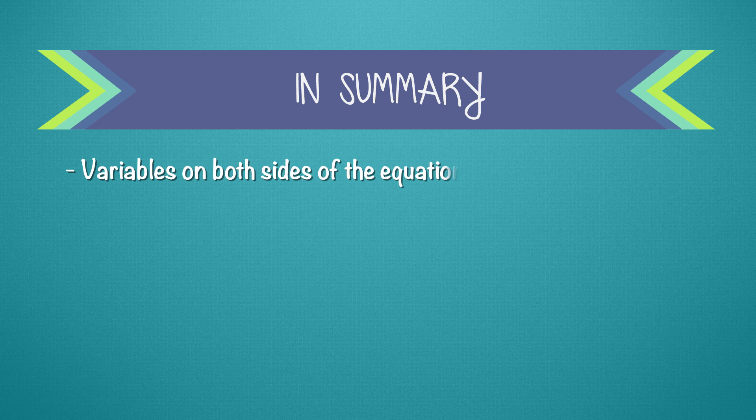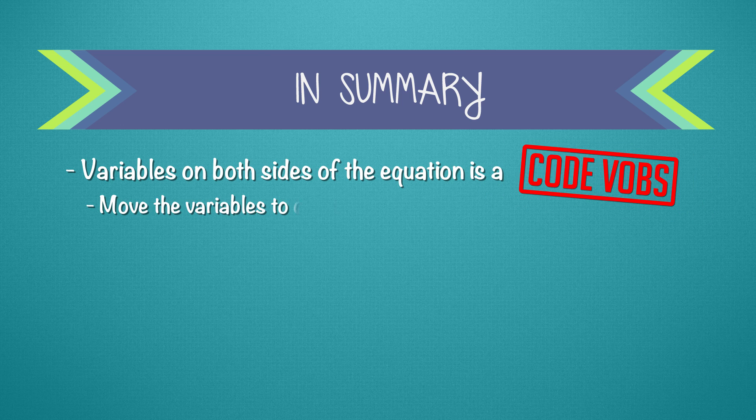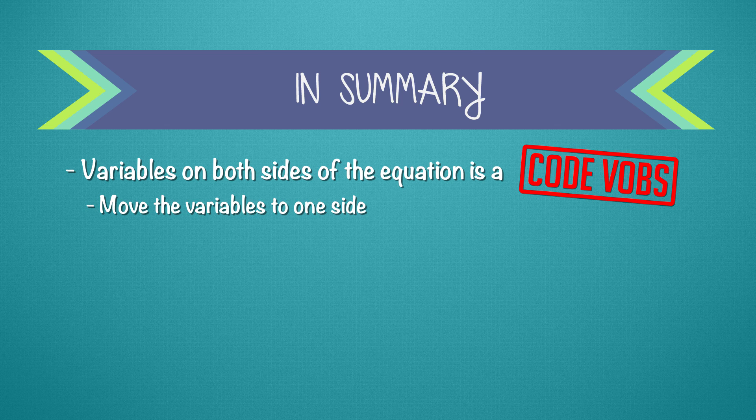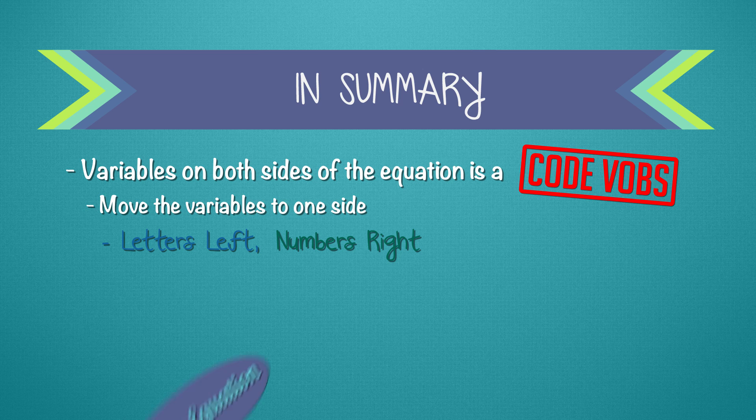Remember, if you see variables on both sides of the equal sign, that's a code VOBS. You can move the variables to either side you like, but a good way to remember is letters left, numbers right. Then you're back to a two-step equation.